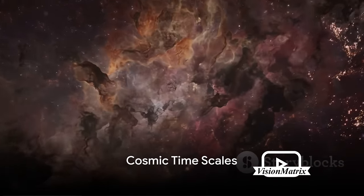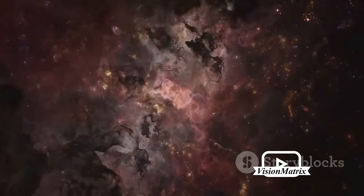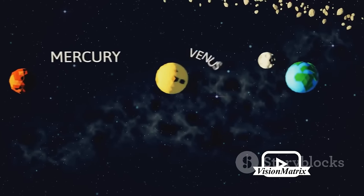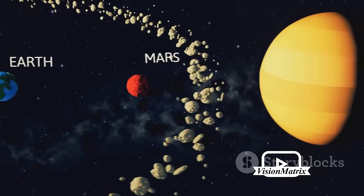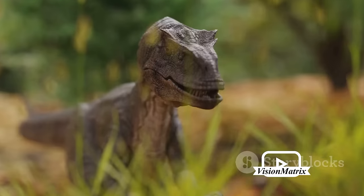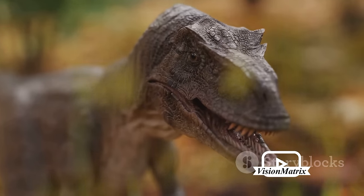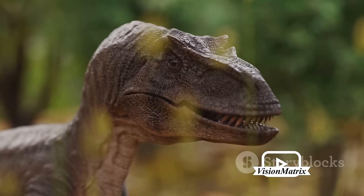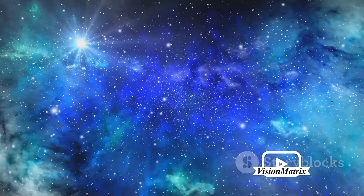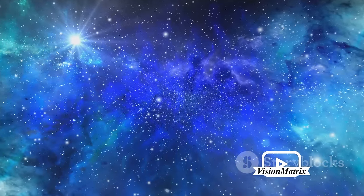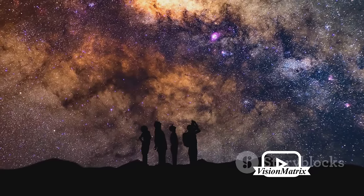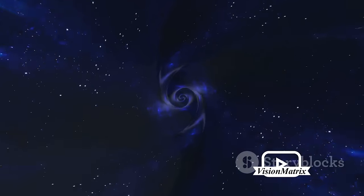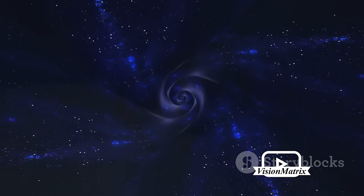The universe operates on a time scale that is almost unfathomable to us. Imagine a film that runs for 14 billion years. That's the age of our universe. If we were to compress this into a single year, the Big Bang would burst into existence on January 1st, and it would take until September for our solar system to form. Dinosaurs would roam the Earth in the last week of December, with human history occupying the final seconds of New Year's Eve. These cosmic time scales vast beyond our everyday comprehension are the heartbeat of the universe. They guide the birth and death of stars, the formation of galaxies, and the evolution of the cosmos. Yet they also remind us of our fleeting existence in the grand scheme of things.